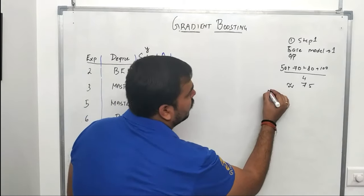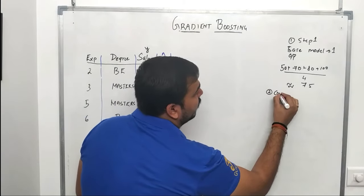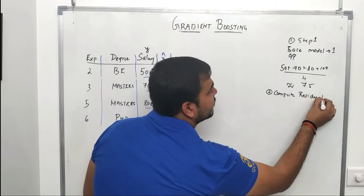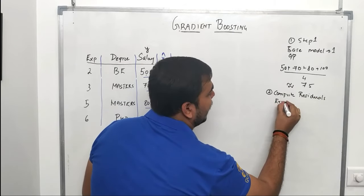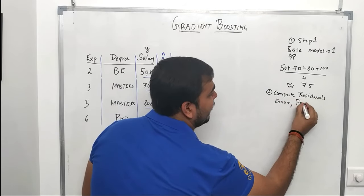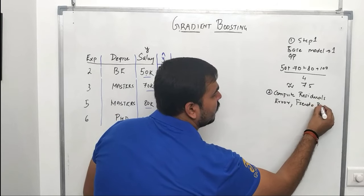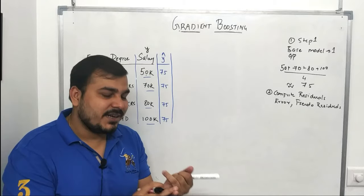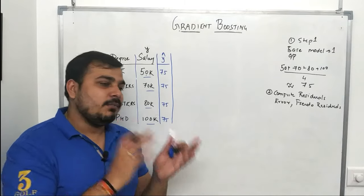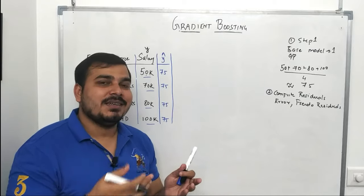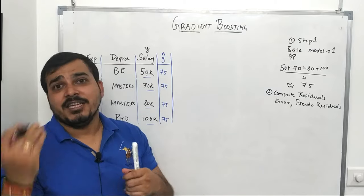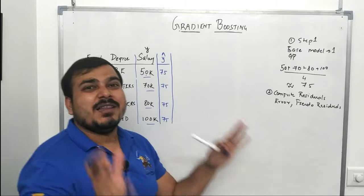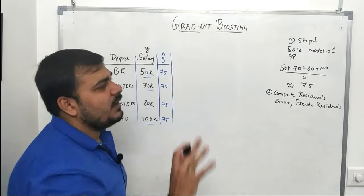That completes the first step. In the second step we compute residuals — basically the errors, also called pseudo residuals. To compute errors we use a loss function. In regression we have loss functions like mean squared error and root mean squared error, and in classification we have log loss, hinge loss, and others.